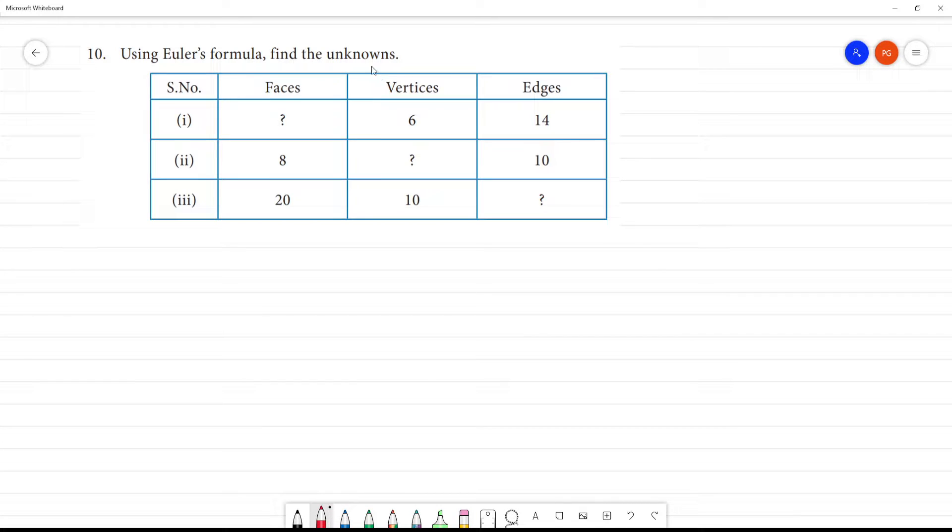Using Euler's formula, find the unknowns. The formula is F + V - E = 2, that is faces plus vertices minus edges is equal to 2. So this is the formula.